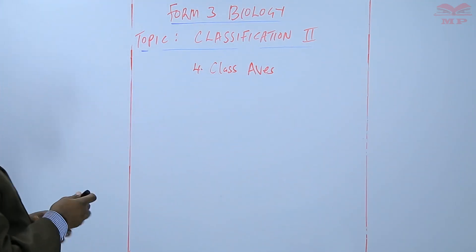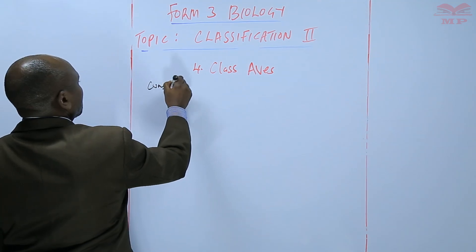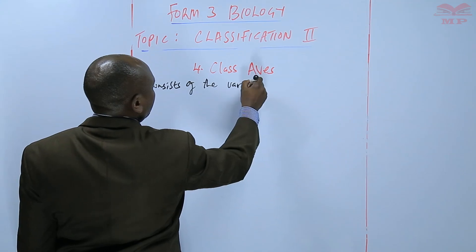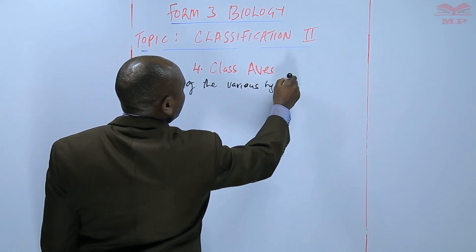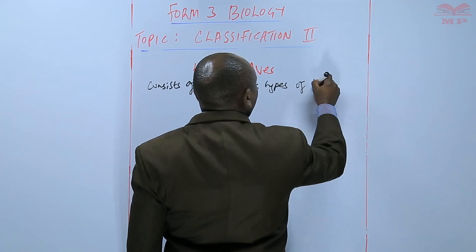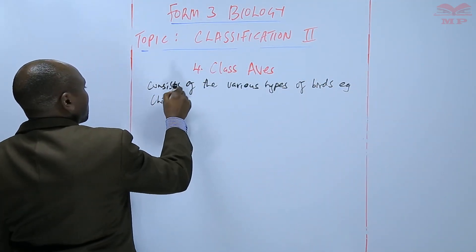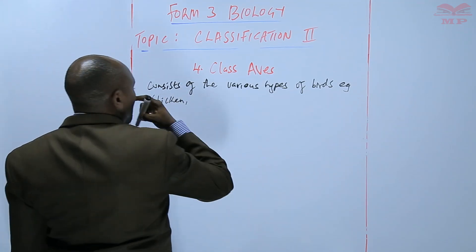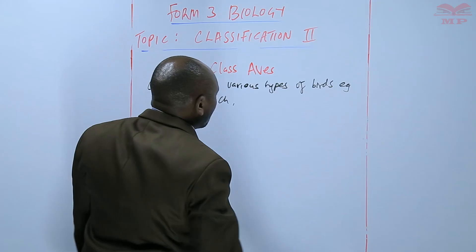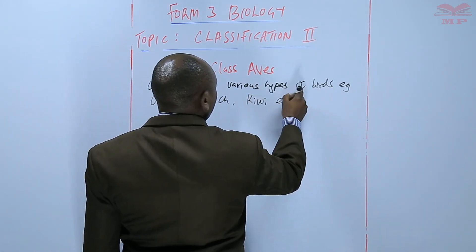Class Aves includes the various types of birds. For example, we have chicken, we have ostrich, and we have kiwi, among others.